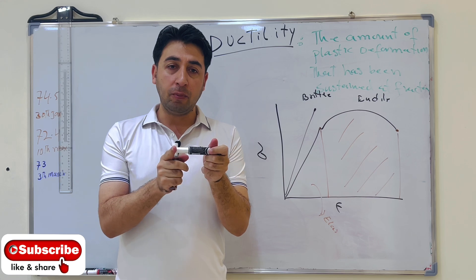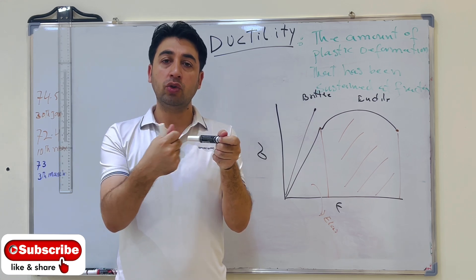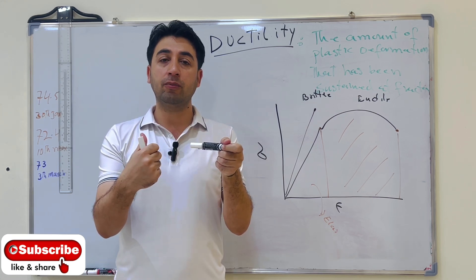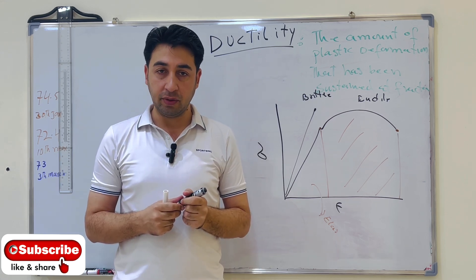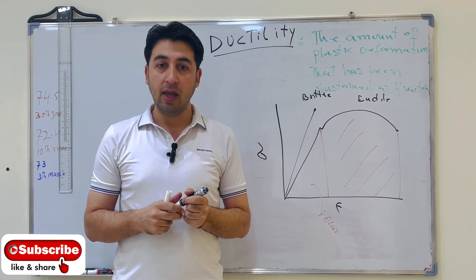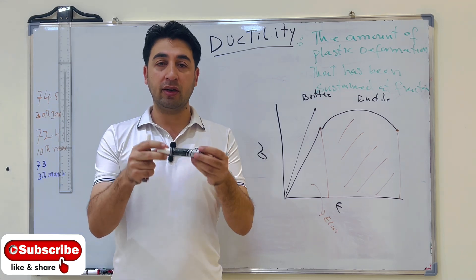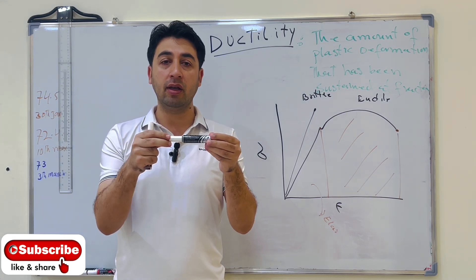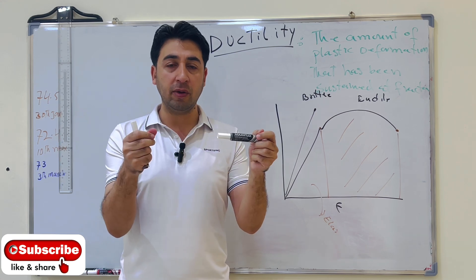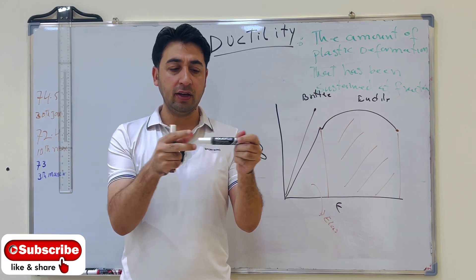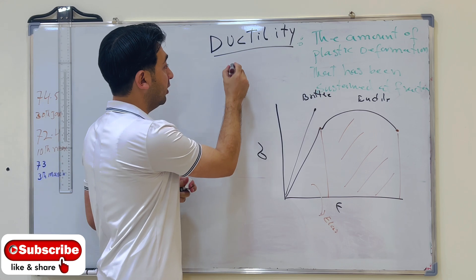That type of plastic deformation from the proportional limit to the fracture point, whatever is sustained in the material, is known as the ductility of the material. How can we measure ductility? One way is as the increase in the length of the specimen — we have the tensile specimen.